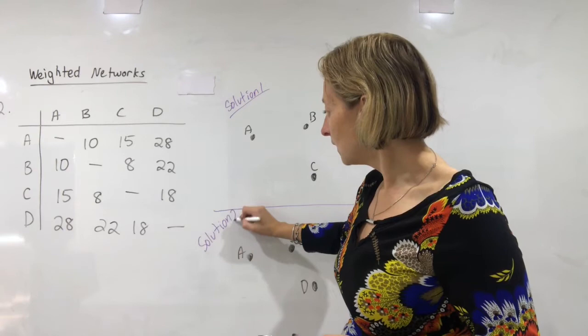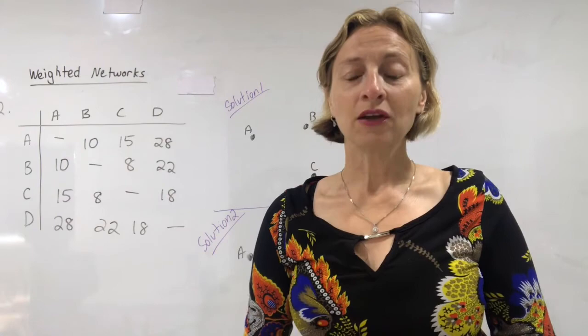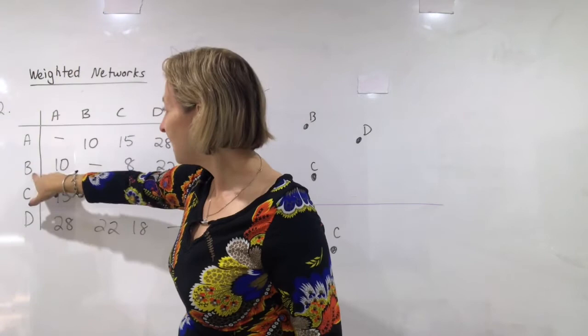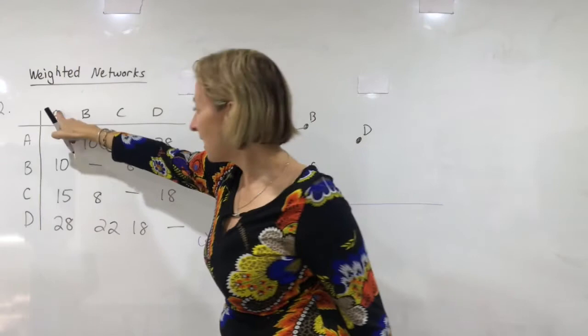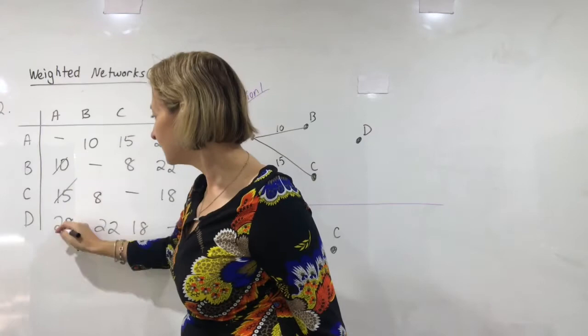My first thing on the table is A to A is obviously nothing because you're connecting the same point. To get from A to B I have a root that should take 10. From A to C, I might just cross it off because I've actually done it. A to C is 15. And A to D is 28. A to D is 28. Okay, so far so good.